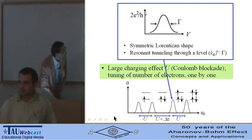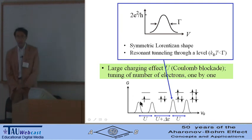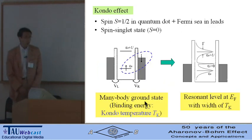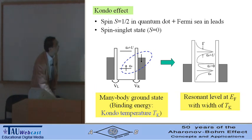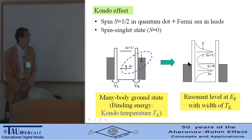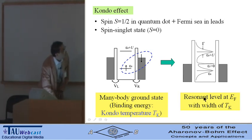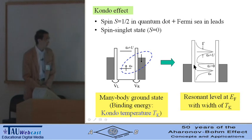Let's consider the Coulomb blockade region with spin one-half. Then the Kondo effect takes place. In the Kondo effect, the spin one-half in the quantum dot is coupled to the Fermi sea in the leads and makes the spin singlet state schematically like this. This is the many-body ground state, and the binding energy is given by the Kondo temperature Tk. So this many-body ground state makes the resonant level at the Fermi level, and width of the resonance is given by the Kondo temperature.